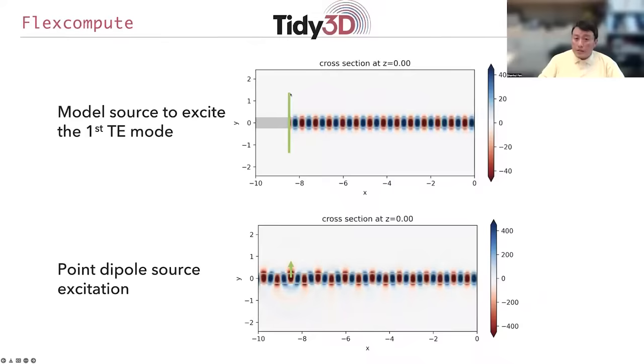And in this case, here is a cross-sectional view through the center of the waveguide. The green line here corresponds to the position of the modal source...